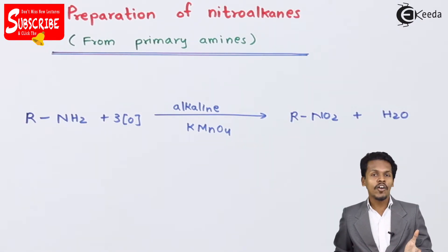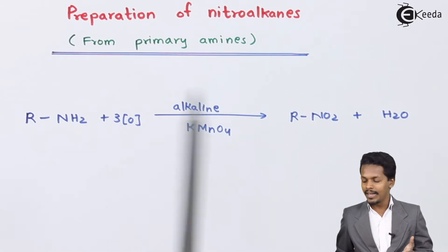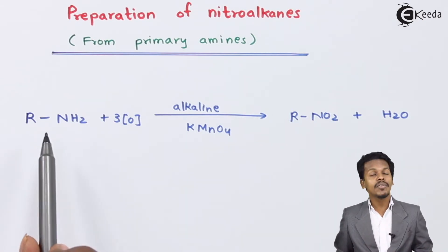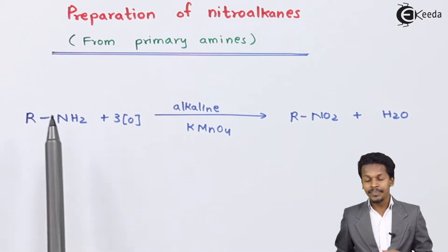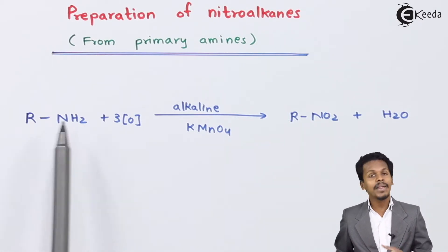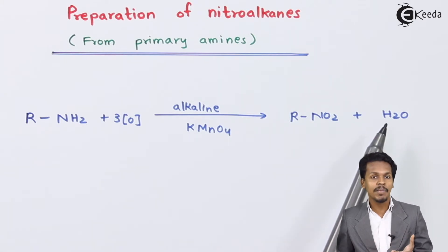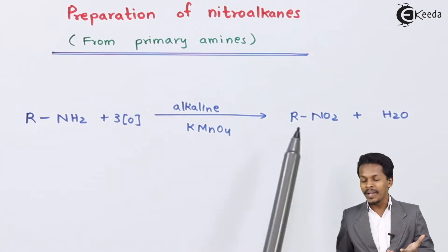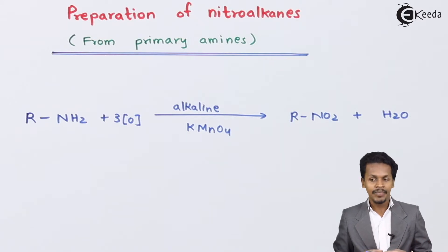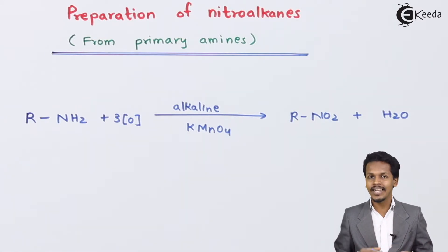This is how we can convert a primary amine into nitroalkane. We use primary amine specifically because if we are talking about a secondary amine, there is no possibility of removing H2O as a byproduct, and therefore obtaining NO2 in that case would be very difficult.